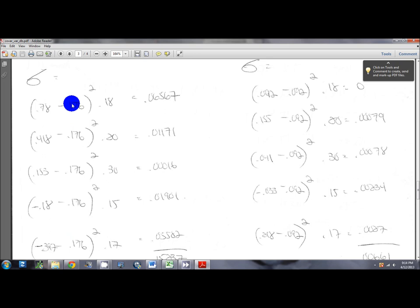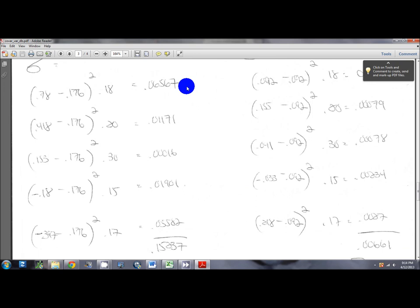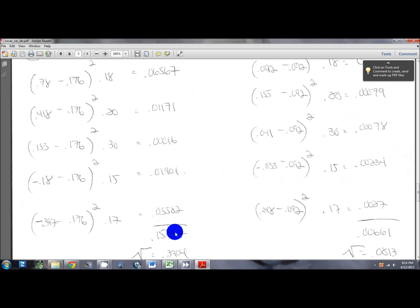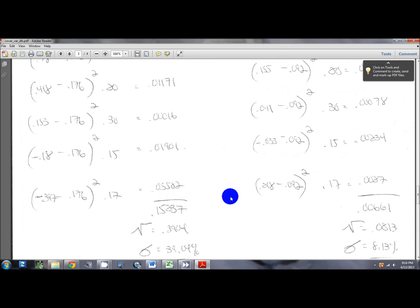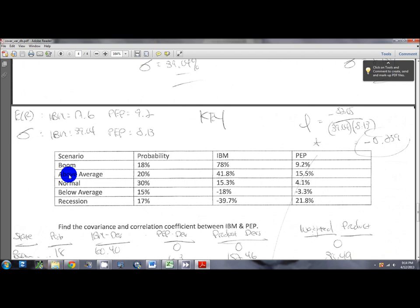You follow that same process for each state. You're going to have five different terms here. Follow that process for each state. It's going to give you five numbers. When you get these five numbers, you simply sum those five numbers. This is your portfolio variance. You take the square root of that number. That gives you the standard deviation. So the standard deviation for IBM is 39.04. Pepsi would be found in the exact same process. That is where all these numbers came from.